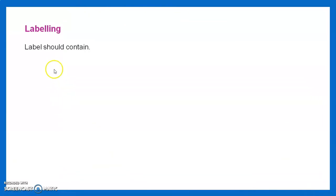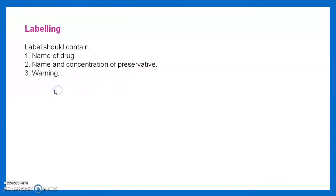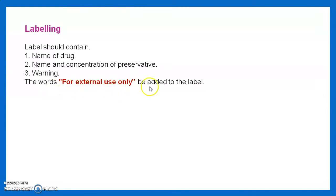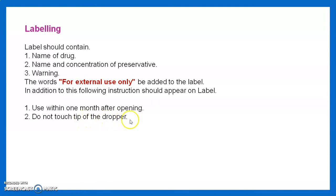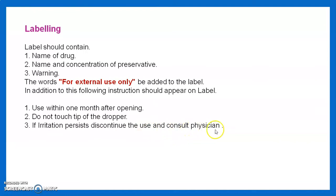Then we see labeling. The label should contain the name of the drug and name and concentration of preservatives. Warning: for external use only. Additional instructions should appear on the label: use within one month after opening; do not touch the tip of the dropper; if irritation persists, discontinue use and consult the physician.